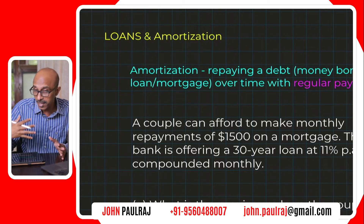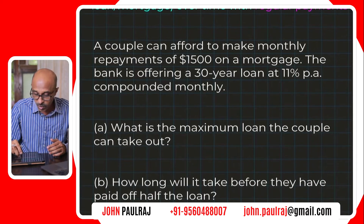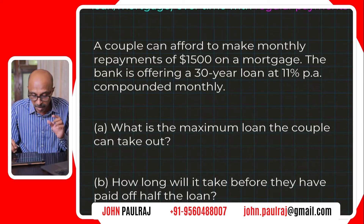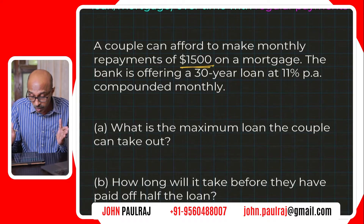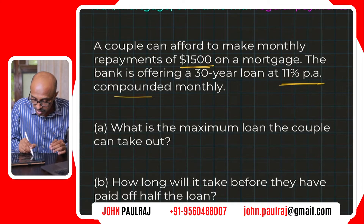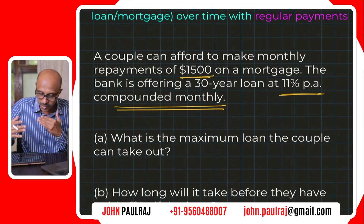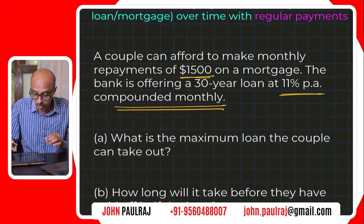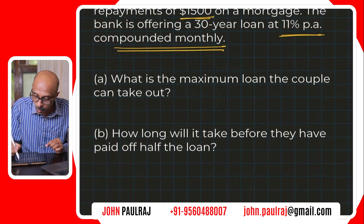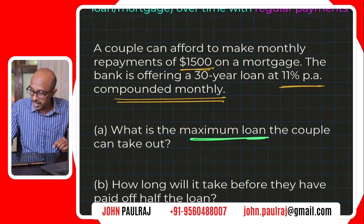Amortization is the process of repaying a debt, a loan, a mortgage over a period of time with regular payments. Here's the question we're going to look at today: a couple can afford to make monthly repayments of $1,500 on a mortgage. The bank is offering a 30-year loan at 11% per annum, compounded monthly. They've calculated they can spare $1,500 per month, and they want to figure out what is the maximum loan they can take out.